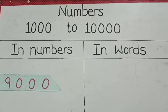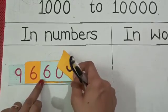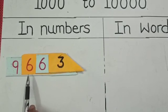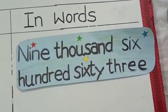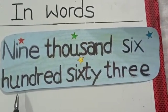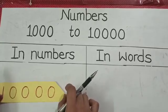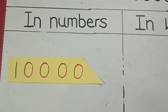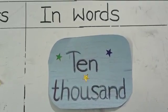Now, 9,663 and in words this number will be written like this. 9,663 and last number is students, 10,000 and in words 10,000.